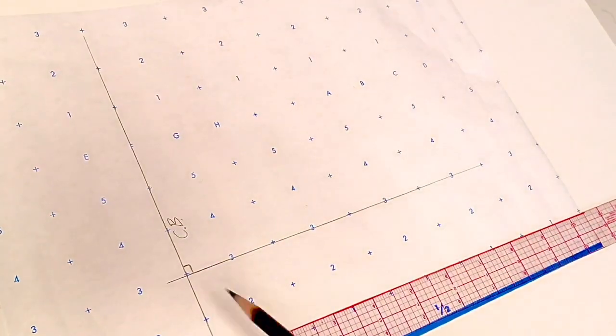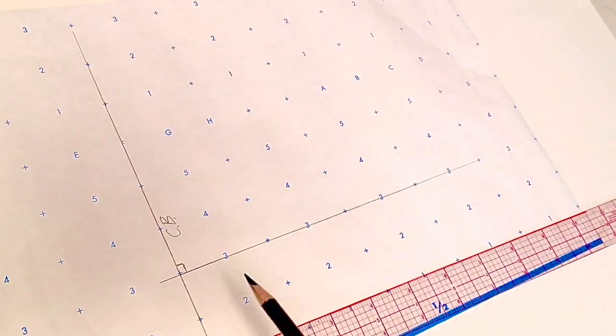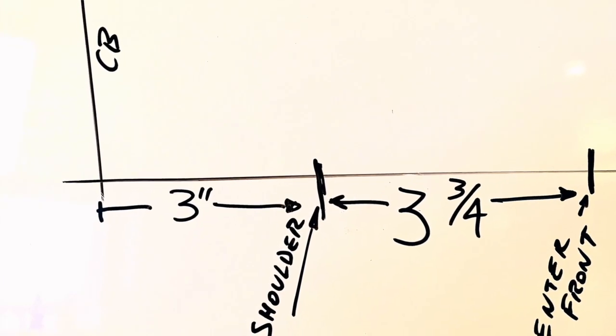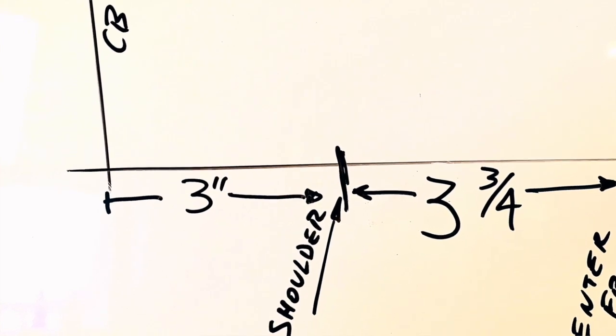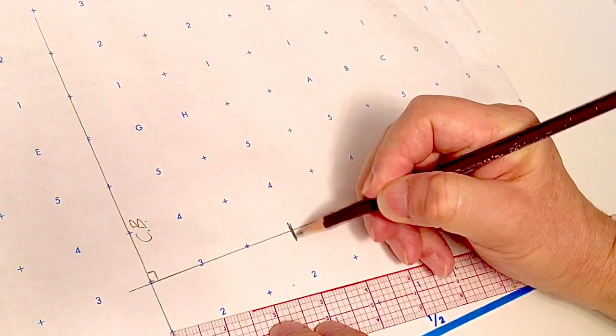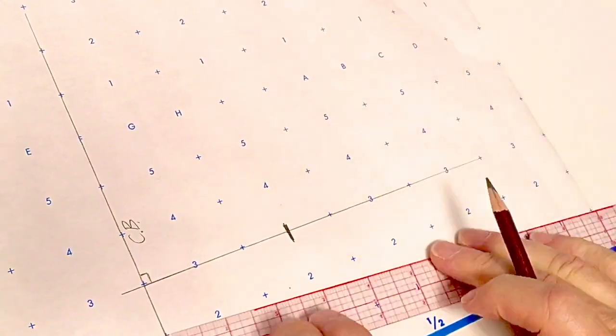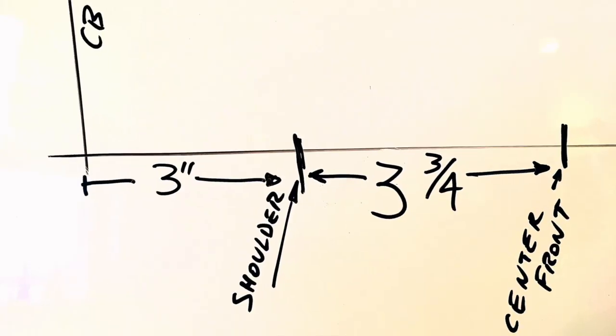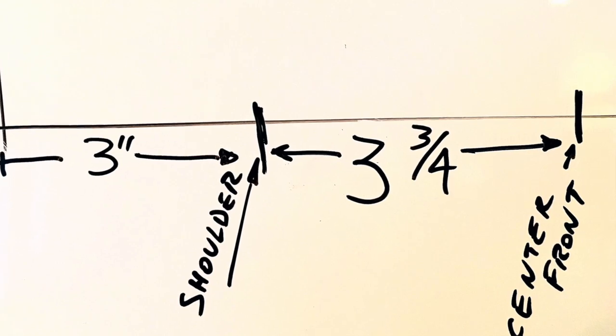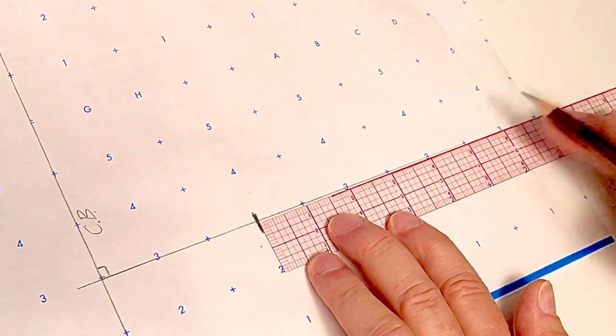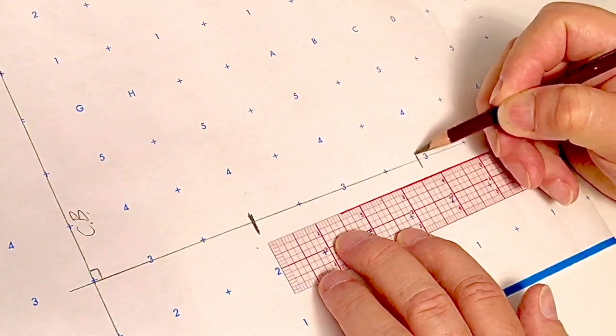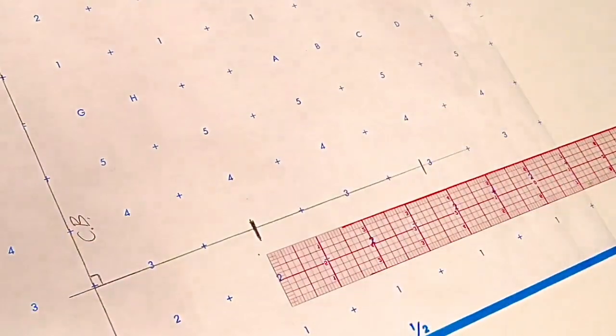Now we've measured the form or pattern and we know that from center back to the shoulder is three inches. So we measure three inches and put a little cross mark, a notch. Then from the shoulder to center front is three and three-quarters. So we measure three and three-quarters and put a cross mark right there. That's our center front.